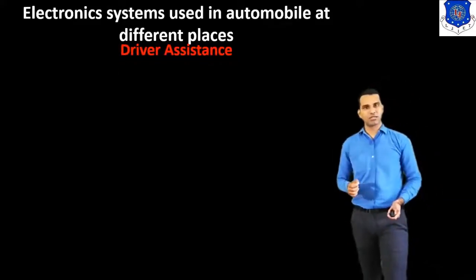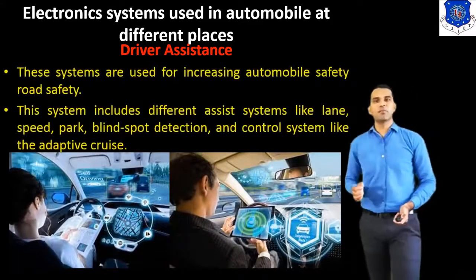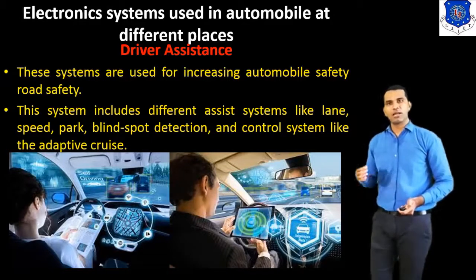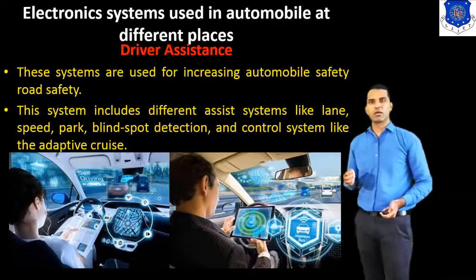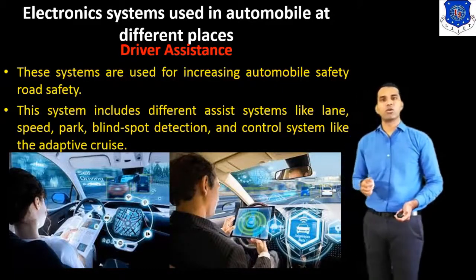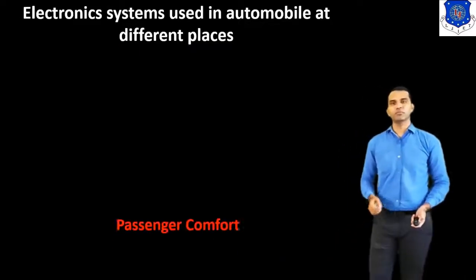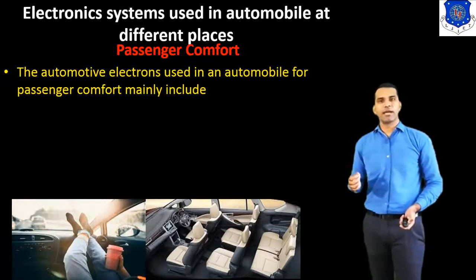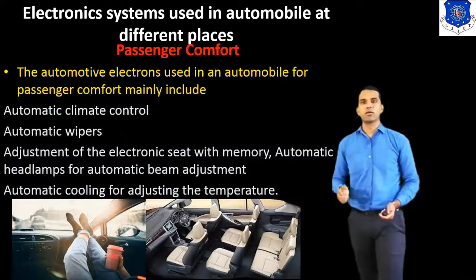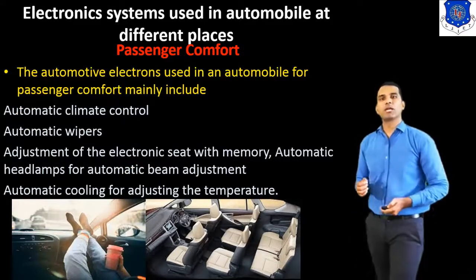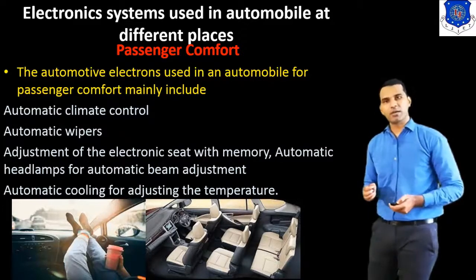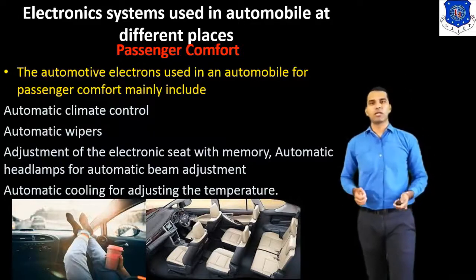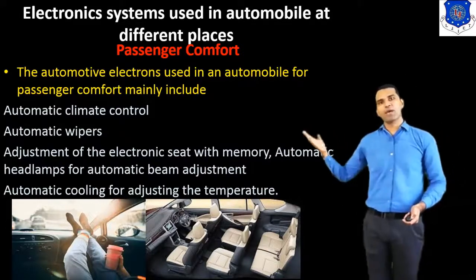Next one is driver assistance. These systems are used for increasing automobile safety and road safety. The system includes different assist systems like lane assistance, speed, blind spot detection, and control systems like adaptive cruise control. Next is passenger comfort. Automotive electronics used in an automobile for passenger comfort mainly include automatic climate control, automatic wiper, adjustment of the electronic seat with memory, automatic headlight for beam adjustment, and automatic cooling for adjusting the temperature.